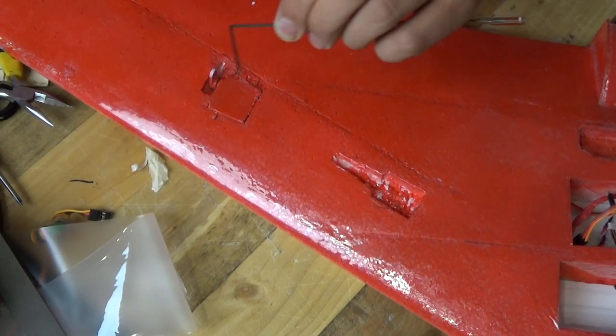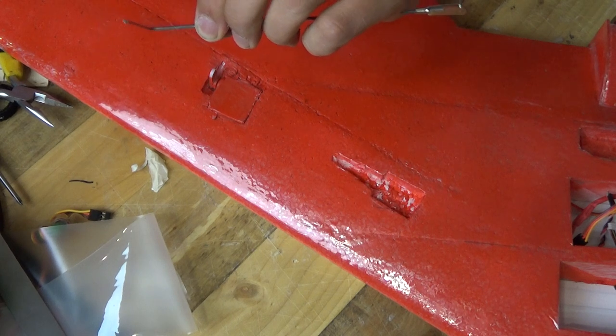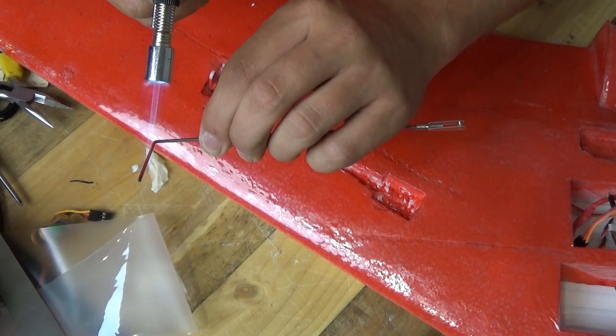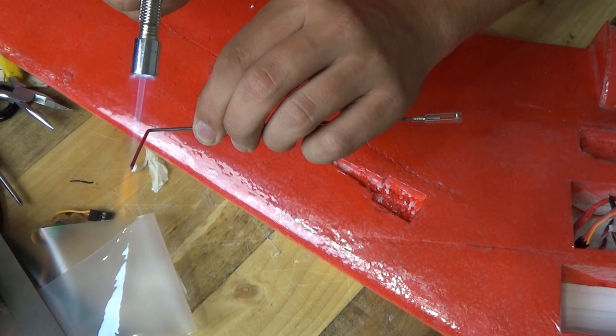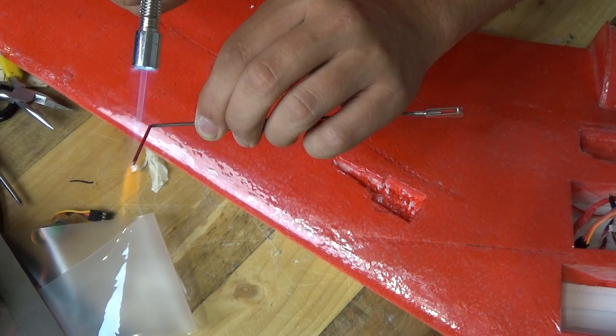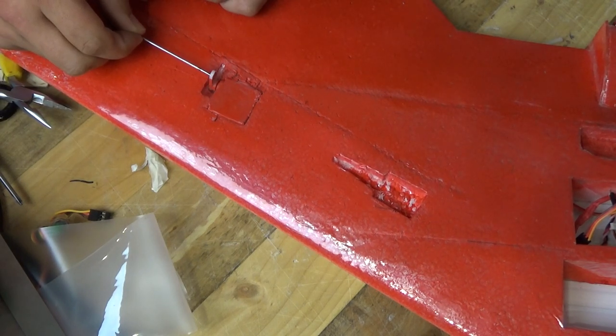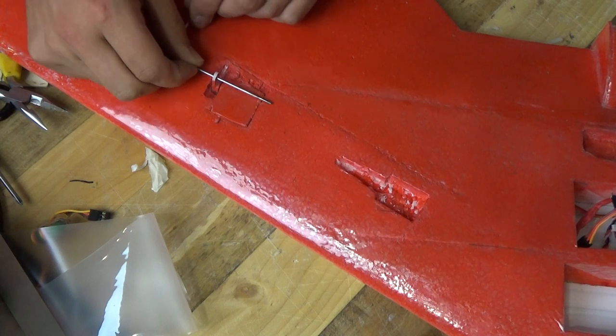This also works for control horns as well. I've just got the blow torch out, blowtorching the end, just waiting for it to glow. Yeah, it's just changed color. Perfect. You don't need too much heat for this. I'm lining up with the hole and we're through.